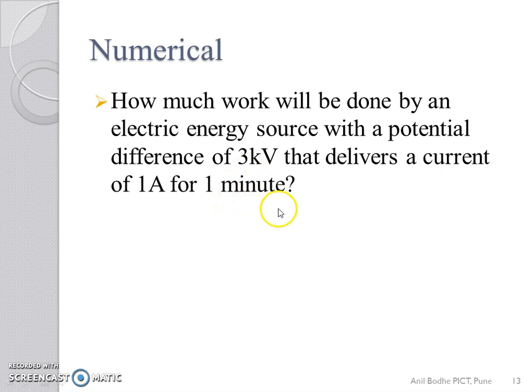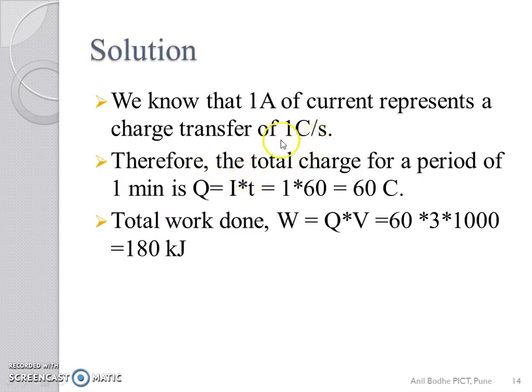Given data is a potential difference of 3 kV means 3000 volts, time 1 minute means 60 seconds and a current of 1 ampere. Here, we know that 1 ampere of current represents a charge transfer of 1 Coulomb per second.